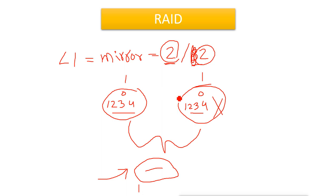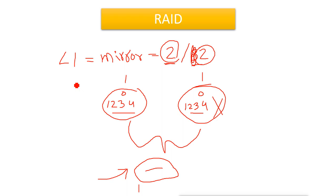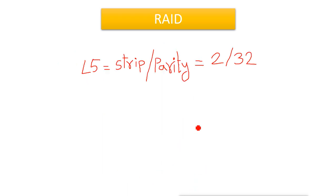If you want cost-effectiveness, performance like RAID 0, and also redundancy, you use another level. RAID levels 2, 3, and 4 are similar but mostly not used. People use RAID level 5 directly because it is more advanced and better than levels 2, 3, and 4. Everyone actually uses RAID level 5.